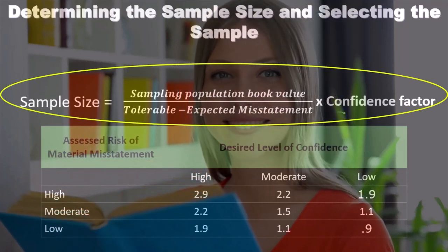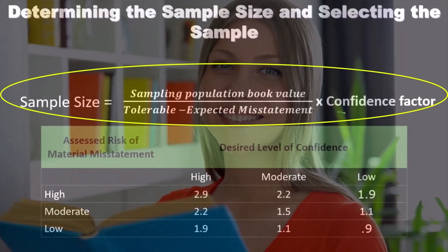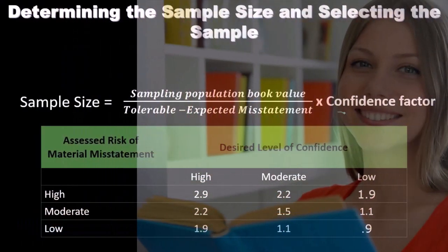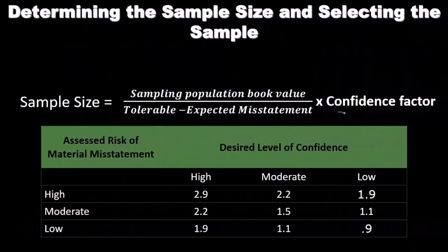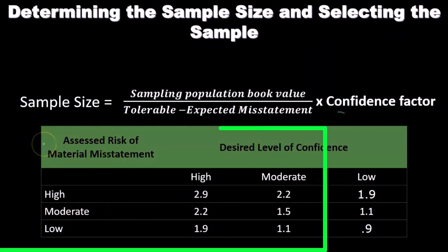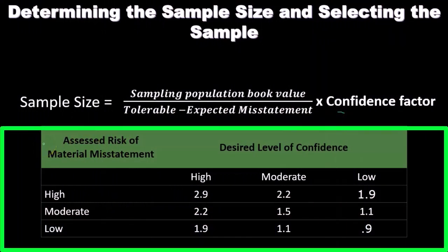This confidence factor might be given in our audit papers — we might have some standardized factors that we would use from a table such as this, where the assessed risk of material misstatement is listed along with the desired level of assurance.